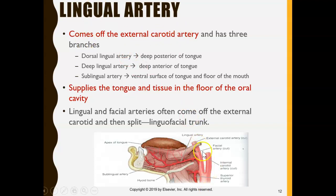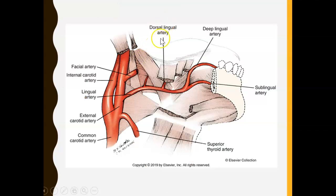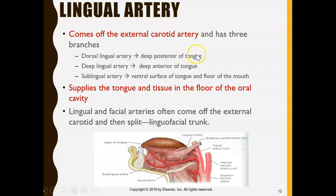The lingual artery comes off of the external carotid artery and supplies many different areas: the dorsolingual artery, the deep lingual artery, and the sublingual artery. The dorsolingual artery supplies the deep posterior part of the tongue. Dorsal means top of the tongue, ventral means the bottom, and posterior means back — so it's giving blood to the back of the tongue.